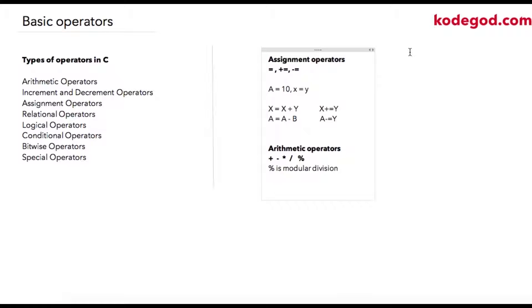So when I write instruction as X equal to 10, what is happening over here? I'm storing integer constant 10 into A. Here I'm storing value of Y into X. Here, what is happening?